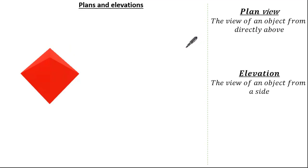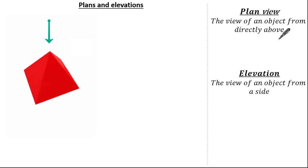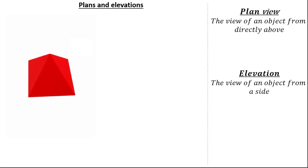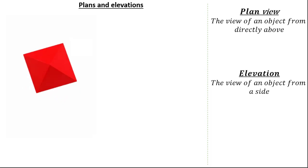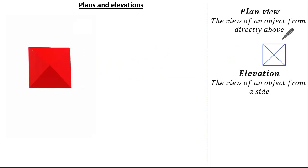Hello everyone and welcome to this tutorial on plans and elevations. So what is a plan view? The plan view is the view of an object from directly above. Let's have a look at this pyramid. To see the plan view you have to imagine floating directly above it. If you were floating directly above it you would see this shape — this is the plan view of our pyramid.